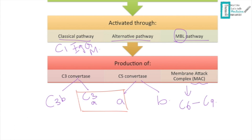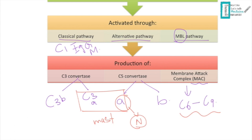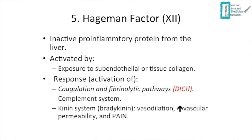C3a and C5a are called anaphylatoxins — they activate mast cells and cause degranulation with release of preformed histamine, as mentioned earlier. C5a is also chemotactic for neutrophils, attracting them to the site. The MAC causes lysis of microbes by forming a hole in them and disturbing cellular homeostasis.